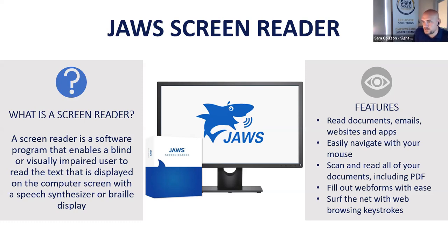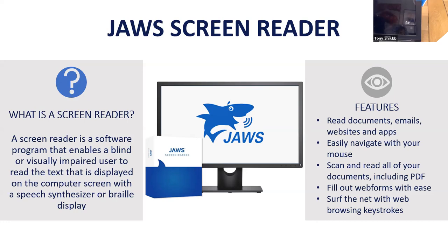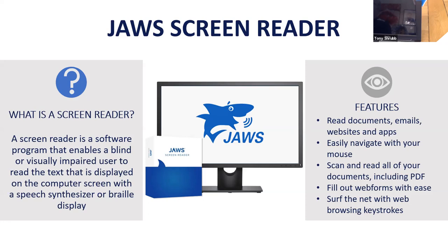Looking at the chat: Christine suggests that if Adam's RP has reduced his visual field significantly, JAWS will be the best option. Sarah agrees ZoomText would be helpful but notes that once sight deteriorates, magnification isn't always suitable for RP and there would be a need to relearn JAWS. Tony responds: there's a product called ZoomText Fusion that addresses exactly that relearning concern.